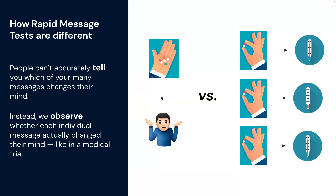The rapid message test process is really different from a lot of more traditional polling message tests where people would be shown different messages, different videos, and have to self-identify what resonated with them, what encourages them to be more excited to vote in November. Instead, we take a philosophy similar to a medical trial, where we divide people into treatment groups and one placebo group for each message. Rather than asking them to self-identify which messages worked best, we measure impact by looking at the difference between the treatment groups and the placebo — how they responded to questions like Biden favorability, or would you vote for this specific law, do you support this policy.